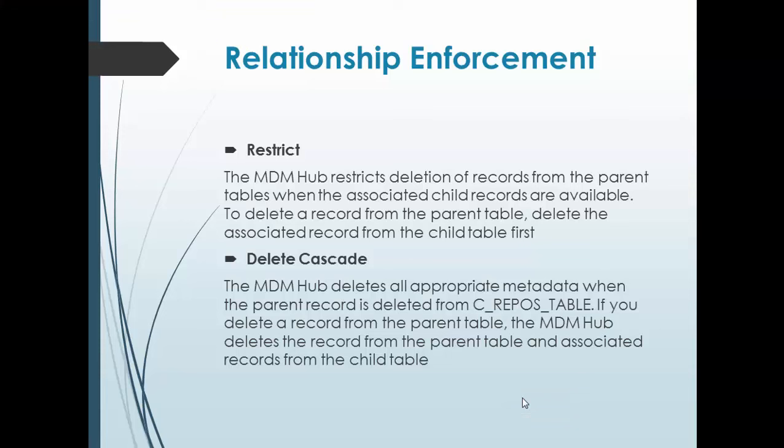Regarding relationship enforcement: MDM hub restricts the deletion of a record from the parent table when associated child records are available. To delete a record from the parent table, you must delete the child records first. With delete cascade, the MDM hub deletes all appropriate metadata when the parent record is deleted from the C_REPOS table — so whenever you delete the record, the corresponding changes will also be deleted from the metadata.